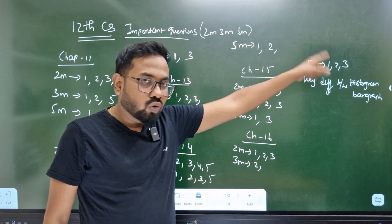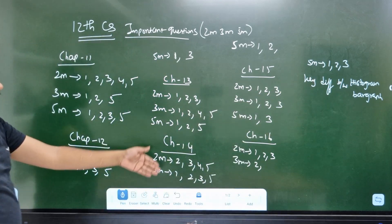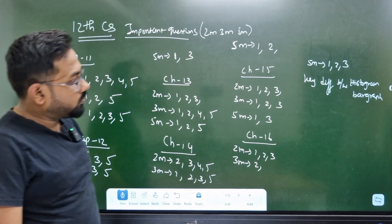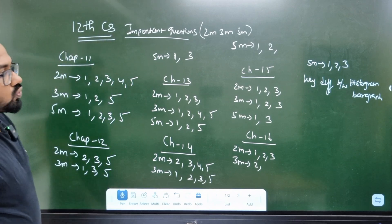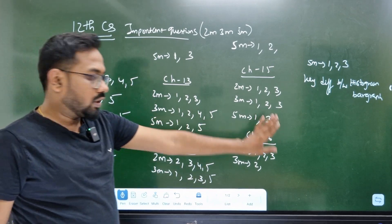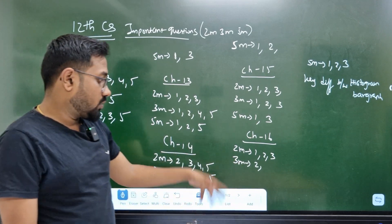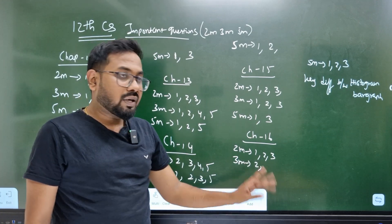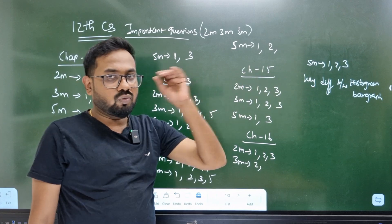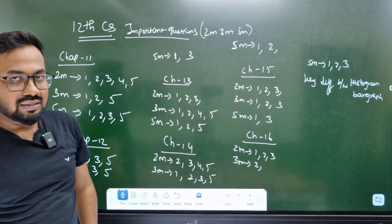If you have 3 details, it is easy. In chapter 14 — 2 mark, 3 mark. Chapter 15 — 2 mark: 1, 2, 3; 3 mark: 1, 2, 3. Chapter 16 — 2 mark: 1, 3; 3 mark: 1, 2, 3; 5 mark: 1, 2, 3. And 5 mark question 3 is important.